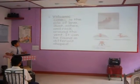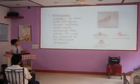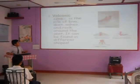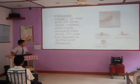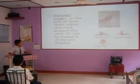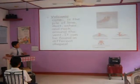Volcanic form. It is the part of the lava, dust, ashes, and the rocks around the ranch. It can be formed in different shapes.